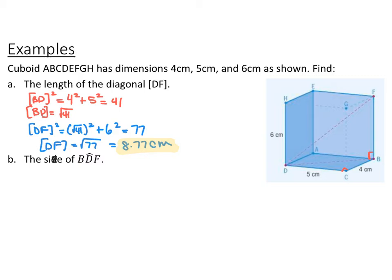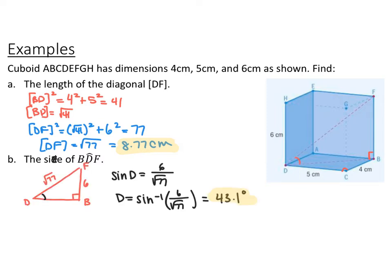Now we want to find the angle BDF — this angle inside the triangle. Looking at triangle BDF, BF is 6 and the hypotenuse DF is the square root of 77. We want angle D. We know the opposite and the hypotenuse, so that's sine using SOHCAHTOA. Sine of angle D equals 6 over the square root of 77. To find the angle, we use inverse trig: angle D equals sine inverse of 6 divided by the square root of 77, which is 43.1 degrees.